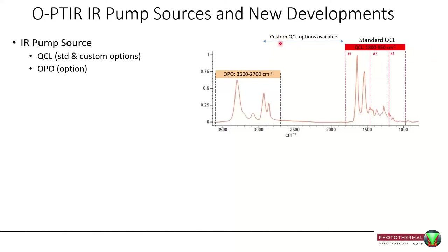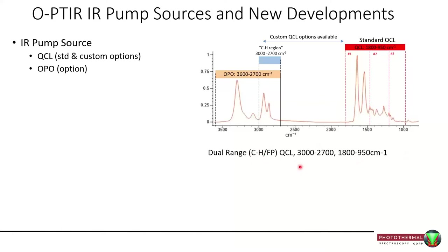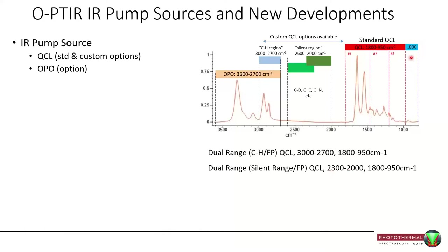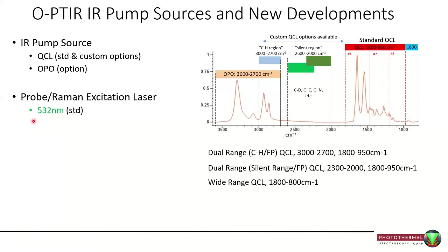My favourite developments are these more custom QCL options. The CH chip in particular — the 3000 to 2700 range — I'm quite excited about. You can add that as your fourth chip; you can house up to four chips in these boxes, and that gives you coverage of the key functional groups in the mid-infrared spectrum. If you're interested in the silent region, you can replace the CH with a silent region chip. Or if you're interested in the low wavenumber end, you can opt for that as your fourth chip and go down to about 800 wavenumbers. For the probe — which doubles as the Raman excitation laser — you can opt for 532 or 785 nm.